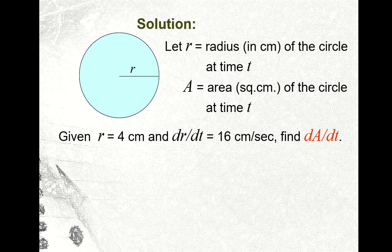Okay, so we're given r equal to 4 centimeter. And the rate of change of the radius with respect to time is given as 16 centimeter per second. And we are asked to find the derivative of A with respect to time or the rate of change of the area as the ripples getting bigger and bigger. So what is the rate of change of the area?